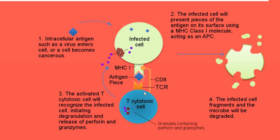Let's review the killing mechanisms of active cytotoxic T cells. The active cytotoxic T cell comes in contact with an infected cell at the site of infection. It knows which cells are infected because infected cells present antigen on their surface using MHC class 1. Once the cytotoxic T cell finds the infected cell, it binds to it. Through exocytosis, the cytotoxic T cell releases perforin and granzymes. Perforin are proteins used to poke a hole in the infected cell.